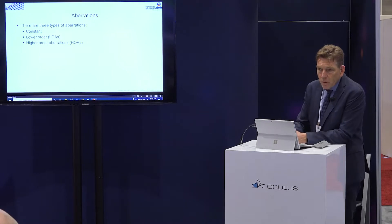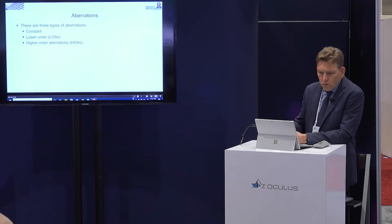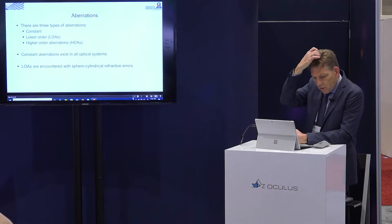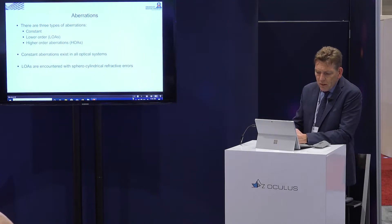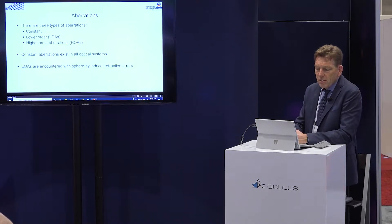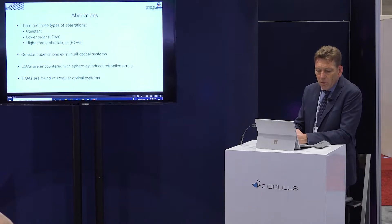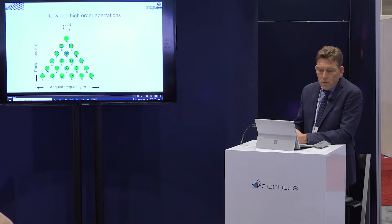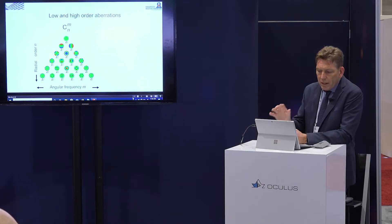If you look at aberrations, there are three types: constant, lower order, and higher order. Constant aberrations are present in all optical systems. Lower order aberrations are encountered with cylindrical and refractive errors; higher order aberrations are found in irregular optical systems. Just briefly: this is the lower and higher order aberration pyramid — the Zernike polynomials.